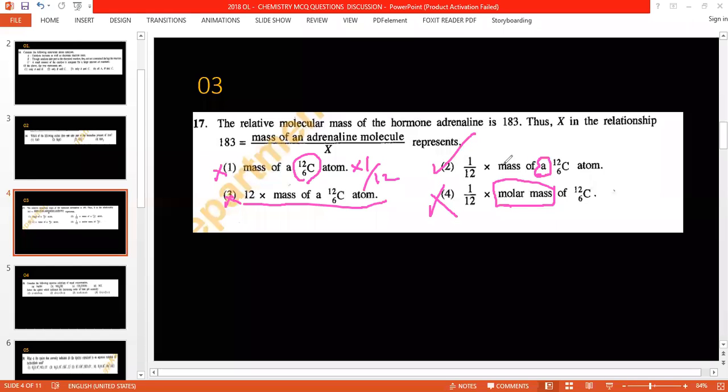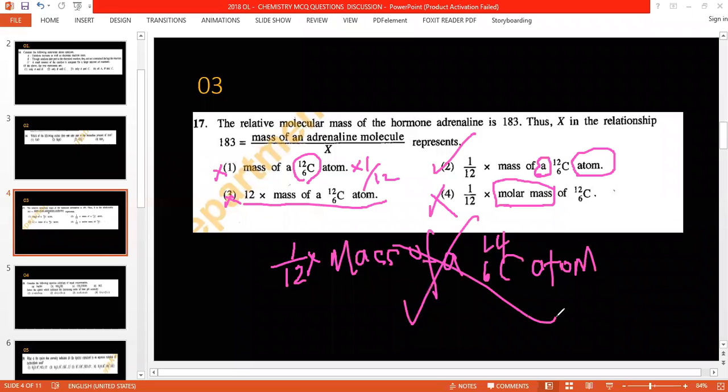1 over 12 into mass of a 12C carbon atom. But interesting one, if they're given 1 over 12 into mass of 14C carbon atom, that's also wrong. Because it should be 12C carbon.